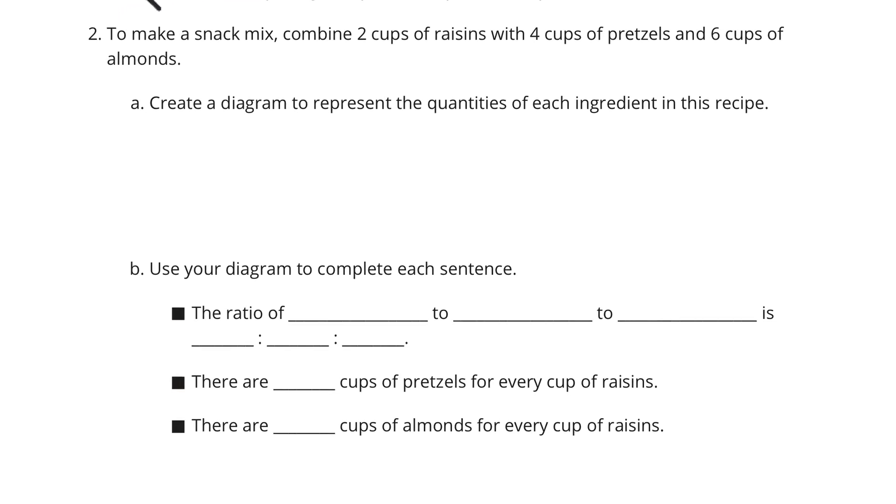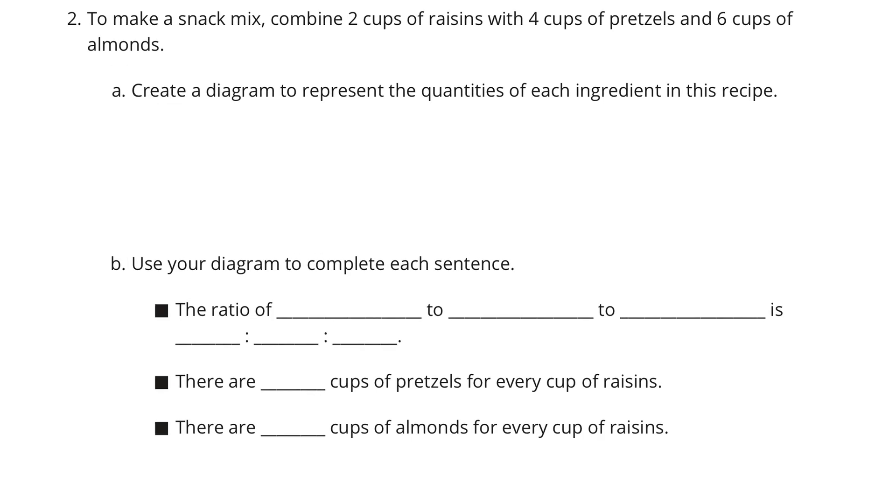To make a snack mix, combine 2 cups of raisins with 4 cups of pretzels and 6 cups of almonds. Create a diagram to represent the quantities of each ingredient in this recipe. Well, remember, our diagrams need words and units. And so, let's start with our raisins. And these will be in cups. We're going to have pretzels. And those are also going to be measured in cups. And lastly, we have almonds. And those will be measured in cups as well.